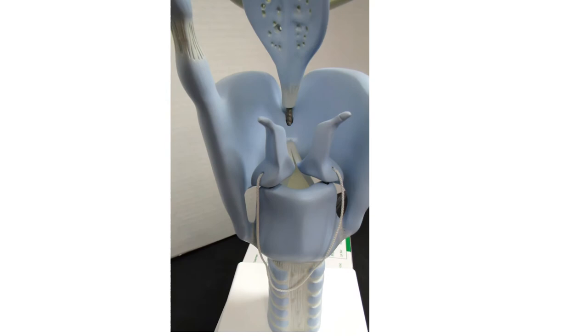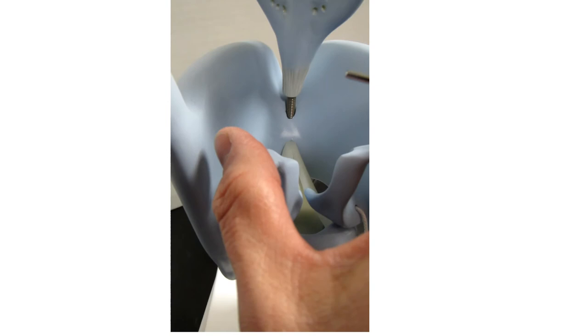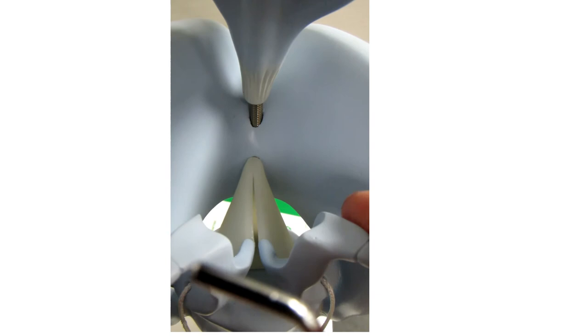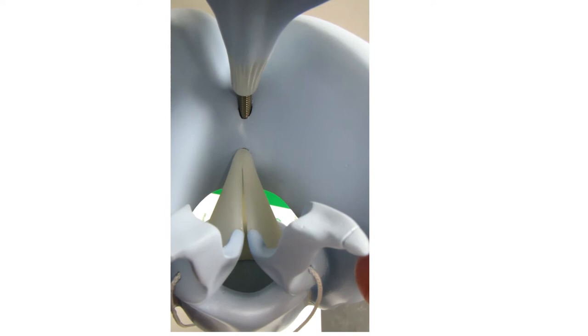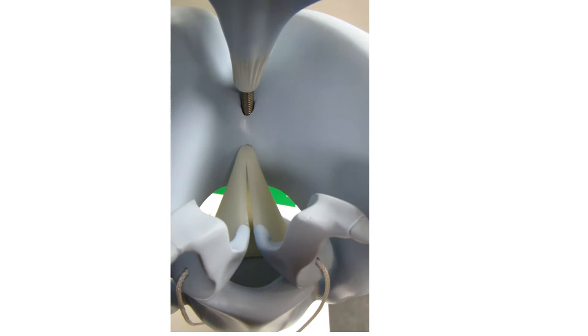The arytenoid cartilages protect a very important structure. If I get a little closer and rotate these arytenoid cartilages medially towards each other, look what happens—a hole appears. If I let them rotate laterally back into their relaxed position, look what happens—the hole closes up. This hole which is opening and closing is referred to as the glottis.